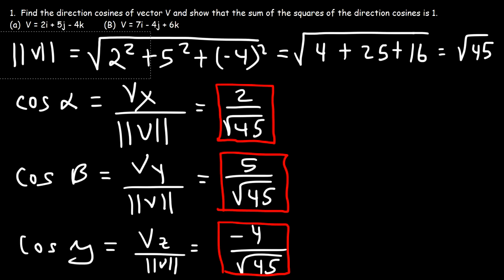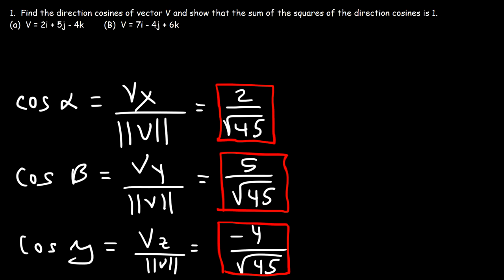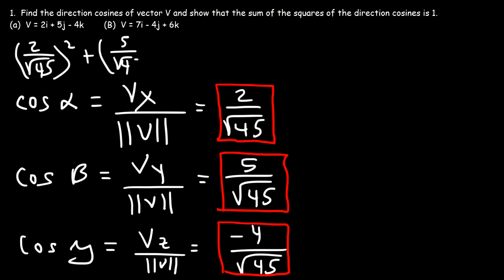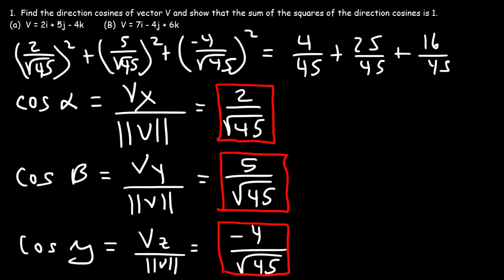Now we need to show that the sum of the squares of the direction cosines is 1. So we compute (2/√45)² + (5/√45)² + (−4/√45)². That gives us 4/45 + 25/45 + 16/45. Since 4 plus 25 plus 16 equals 45, we get 45 over 45, which equals 1.